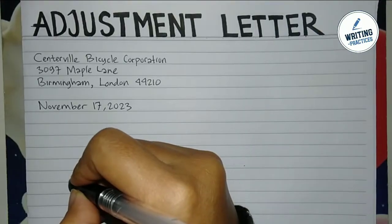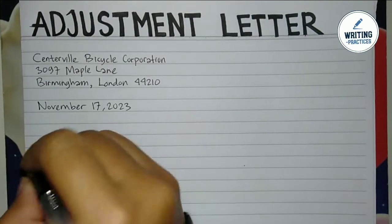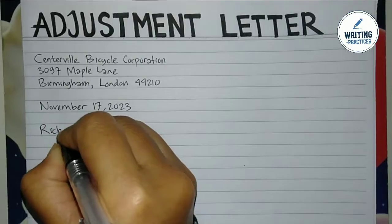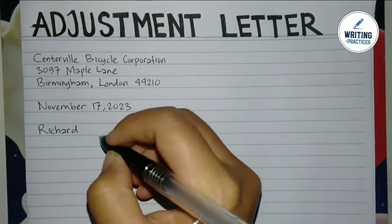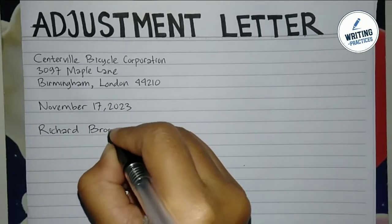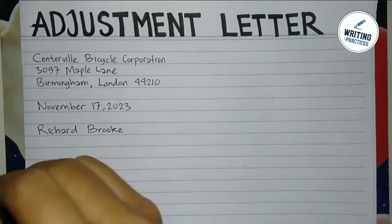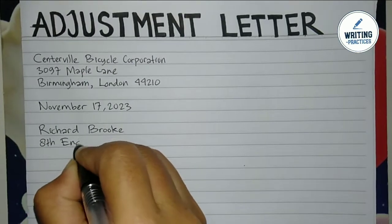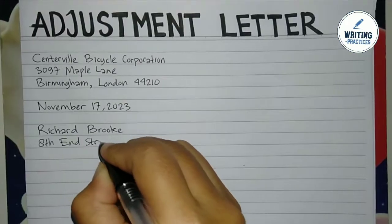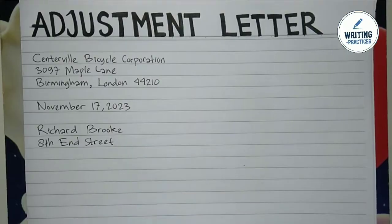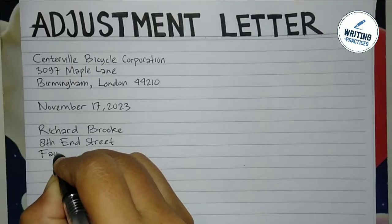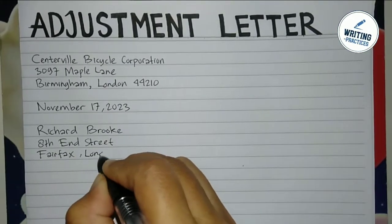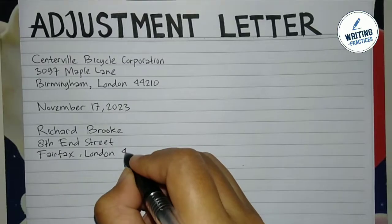For the next section, write the information about the recipient — the one who sent you a complaint or claim letter. Write their full name, and under it write the home address. You need to include the number, street name, city, state, and zip code. In this example, the recipient is the writer's customer.